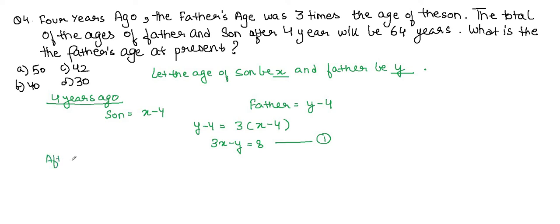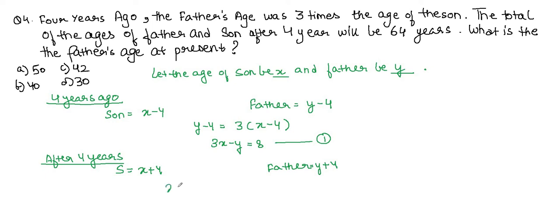After 4 years: son's age = x + 4, father's age = y + 4. Their total will be 64 years: (x + 4) + (y + 4) = 64. This simplifies to x + y = 56. This is equation number 2.